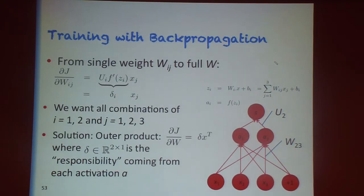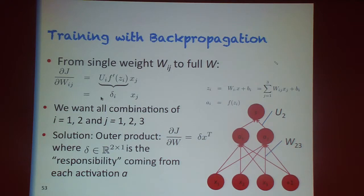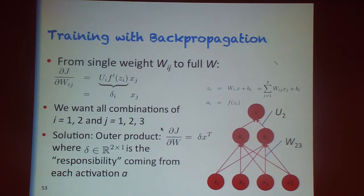That's the derivative with respect to a single weight. If we want derivatives with respect to all w variables — the whole weight matrix — we do the same thing for each, and every one has the form delta_i times x_j. Working out all combinations is equivalent to computing the outer product of the delta_i vector and the x_j vector, making a matrix with all respective terms multiplied together.